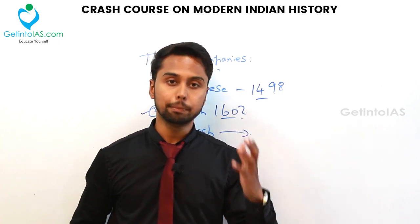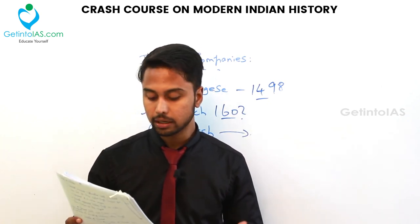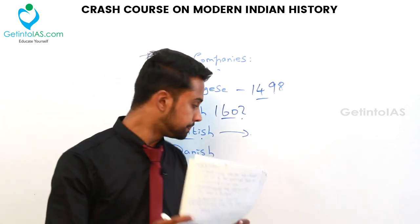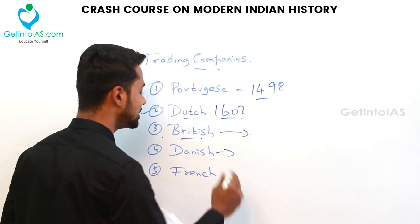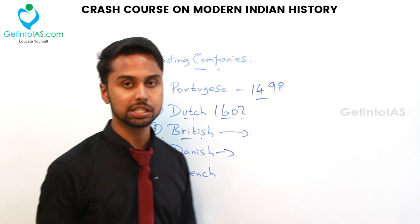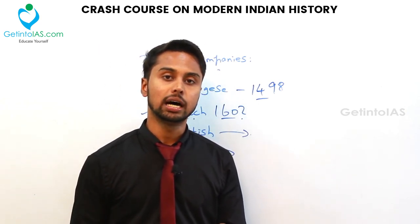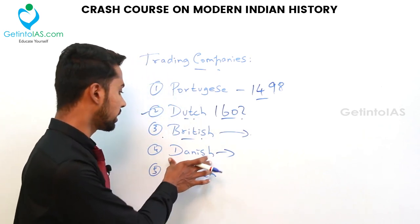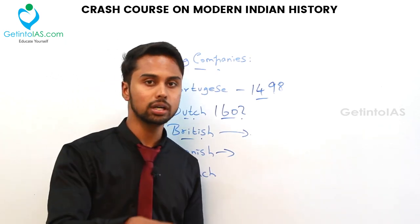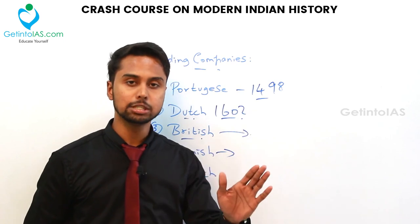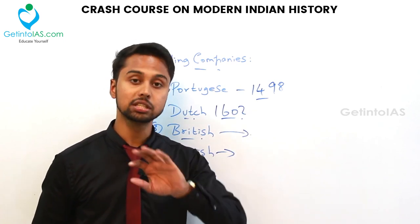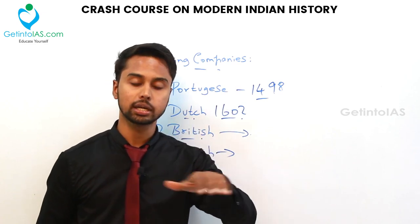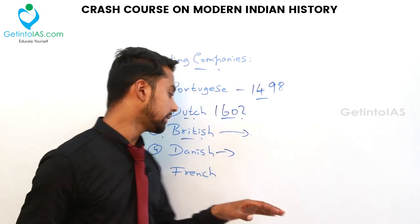British factories were set up at Masulipatnam and Armageddon. Next, the Danish people (from Denmark) also came to India, but their main aim was not trading — it was missionary activities to convert people to Christianity. Danish factories were set up at Tranquebar and Serampore, with Serampore in Bengal as their headquarters.